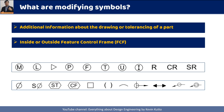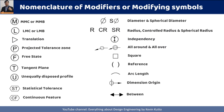We have a total of 22 modifying symbols in ASME Y14.5 2009. I am not going to go through each one of them — you can pause the video and read it yourself. In 2018, one more modifier was added, which I will cover in future videos.